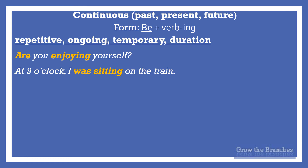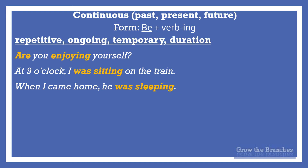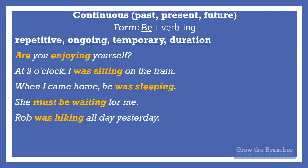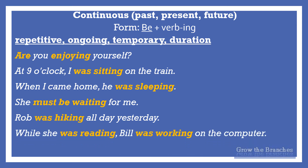'At 9 o'clock I was sitting on the train' — during 9 o'clock I was sitting; duration and ongoing action at 9 o'clock. 'When I came home, he was sleeping' — was sleeping is an action that was happening at the time of coming back home. 'She must be waiting for me' — at the moment of speaking, now she is waiting; ongoing duration. 'Rob was hiking all day yesterday' — during all day yesterday, from beginning to end, the action was ongoing, in progression. 'While she was reading, Bill was working on the computer' — one action taking place during all the time of another action. 'In January, I'll be living at my brother's' — from the beginning to the end of January the action will be taking place the whole month.